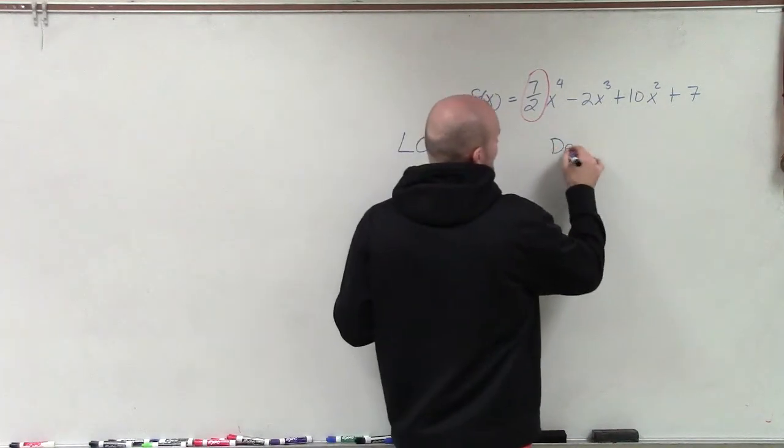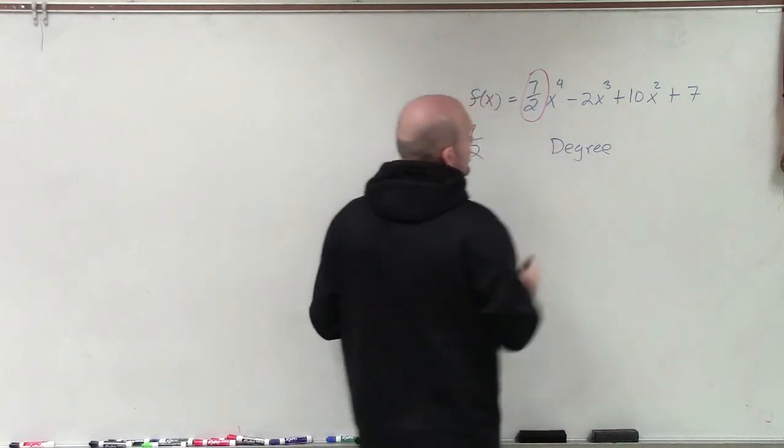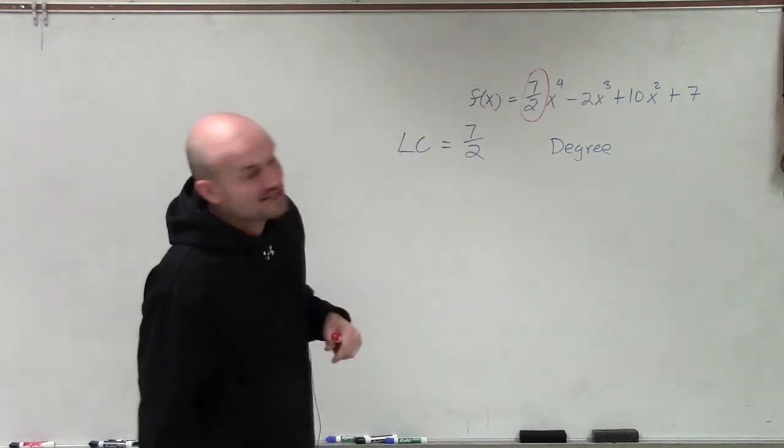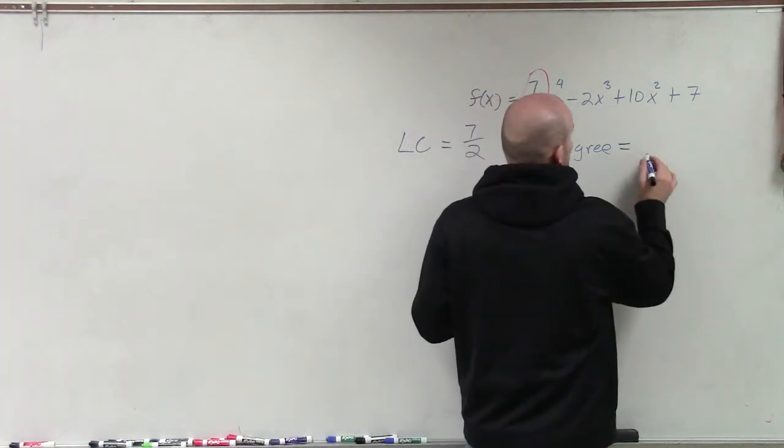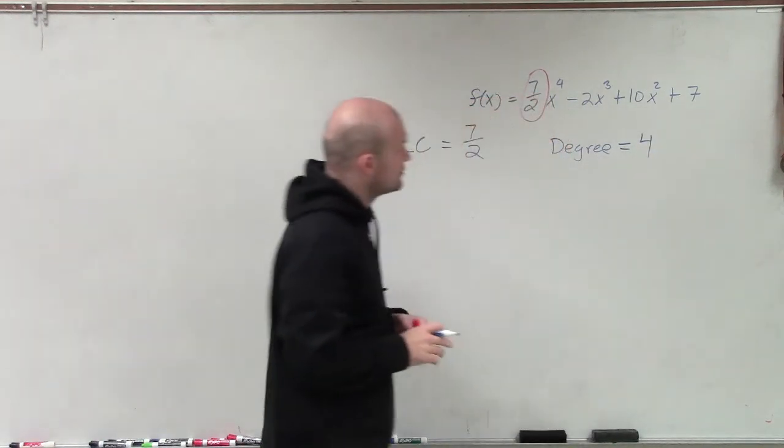Then, remember, the degree is going to be the power of your leading term of your polynomial, which in this case is a 4. It might look like a 9, but it actually is a 4. So our degree of our polynomial is equal to 4.